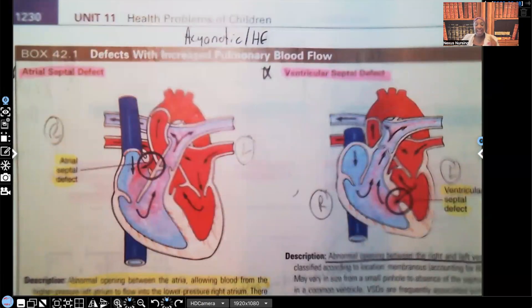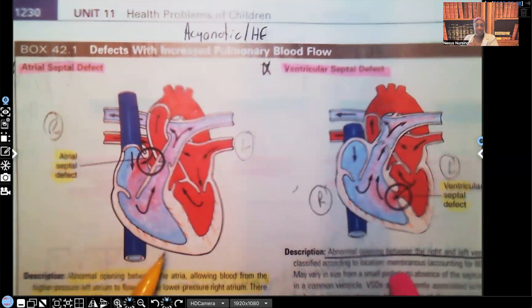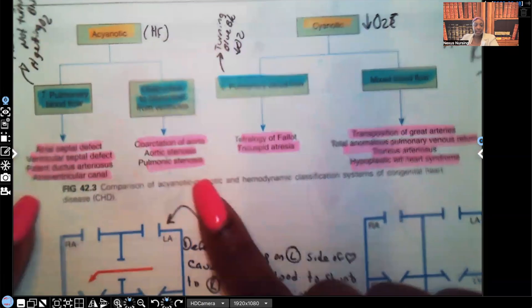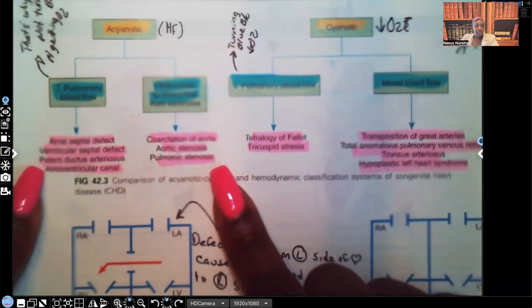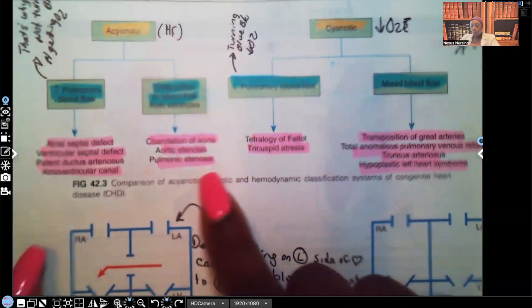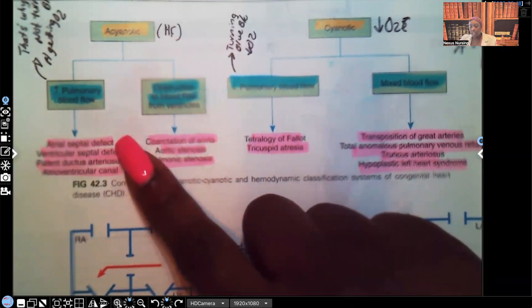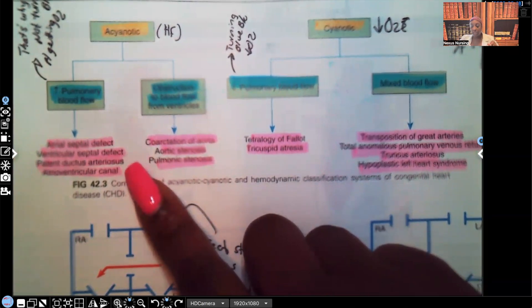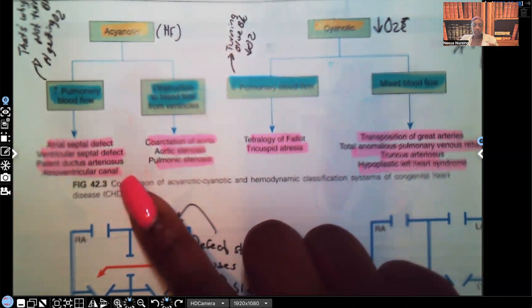Now that you guys have seen the difference between these two, it makes more sense. If you guys rewind the video and go back to this, it will make more sense to you. How under acyanotic, you see how I put heart failure, we have increased pulmonary blood flow, and that's our atrial septal defect and ventricular septal defect. Those are the two I've gone over on this video. Part two, I'm going to go over the other two, which is patent ductus arteriosus and atrioventricular canal.